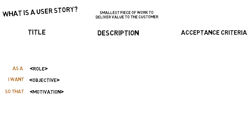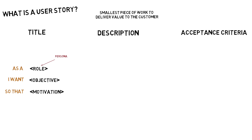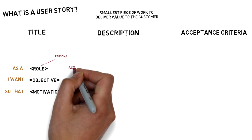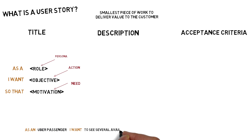The user story defines a functionality. It is expressed as a persona — the role, who are we doing this for — that is performing an action, an objective, so they can satisfy a need, the motivation. An example of a user story could be: as an Uber passenger, I want to see several available drivers in my area, so that I can choose the closest one to me.